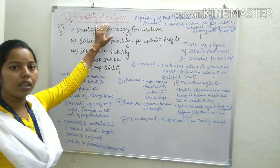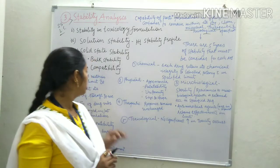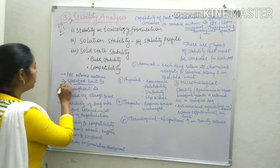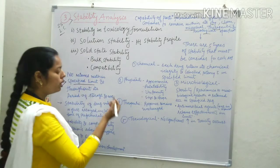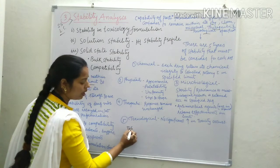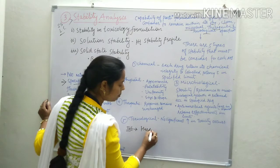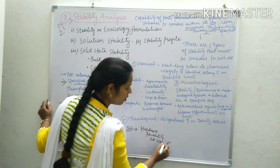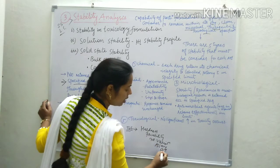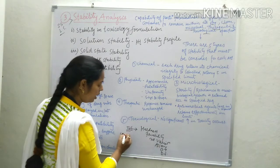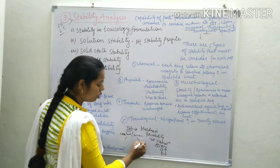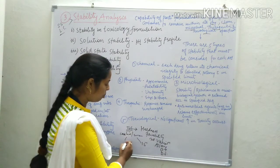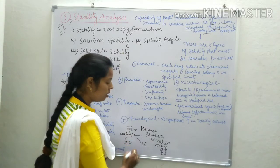In the introductory part of stability analysis, the final product should retain within specified limits — the parameters which we determine before formulation. For example, for a tablet we predict hardness, fragility, weight variation, assay, disintegration and dissolution parameters. If the tablet is coated or uncoated, the dissolution profile would be different in both cases.